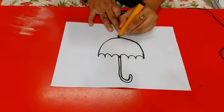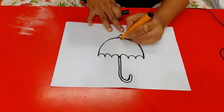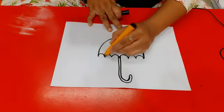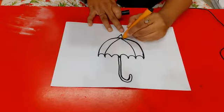In the middle, we have to draw a triangle over here and also draw the lines to make the umbrella.